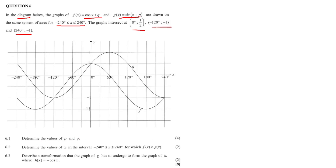p is a horizontal shift — it's inside the bracket — and q is a vertical shift — it's outside the bracket. Let's start with p first and how that relates to our g graph and sine.